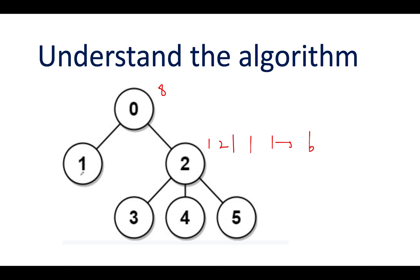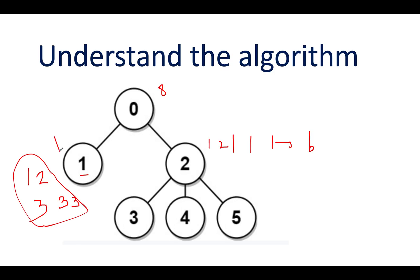Let's calculate the distance of node one from the rest of the nodes. The distance from zero is one, from two is two, from three is three, from four is three, and from five is three. This adds up to a total of 12.